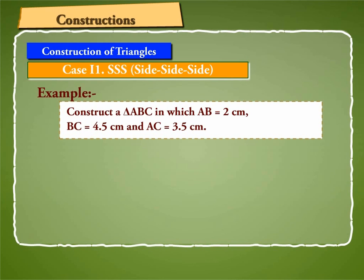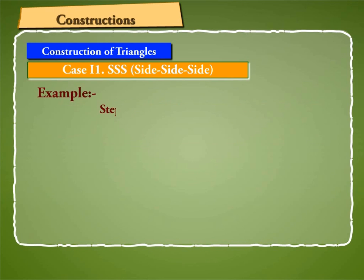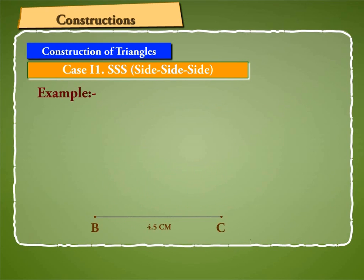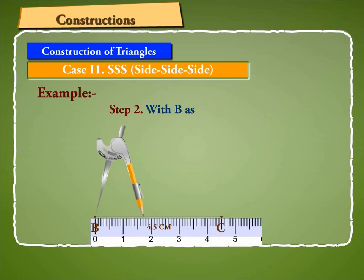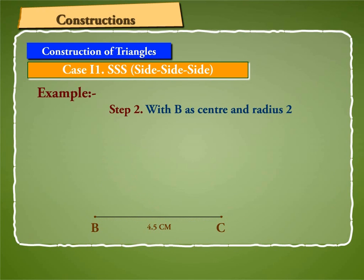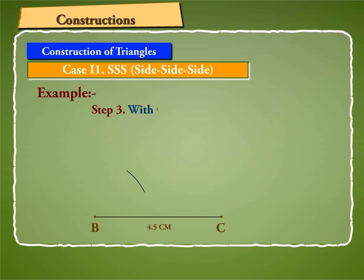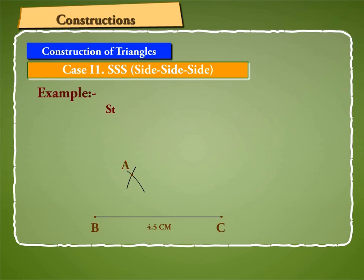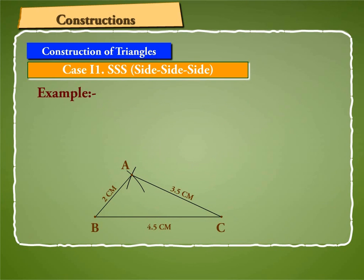We take the following steps. Step 1: Draw BC equal to 4.5 cm. Step 2: With B as center and radius 2 cm, draw an arc. Step 3: With C as center and radius 3.5 cm, draw another arc cutting the previous arc at A. Step 4: Join A to B and A to C. Then ABC is the required triangle.